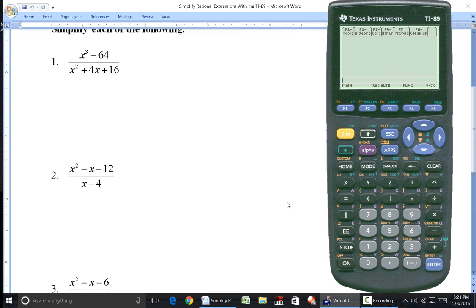Here again I have an improper fraction. The degree of the numerator is 2, the degree of the denominator is 1. So if I just go ahead and perform the indicated division on the calculator, this is x to the second minus x minus 12, divided by the factor of x minus 4.